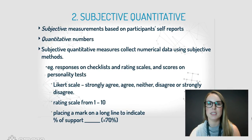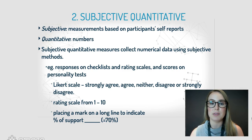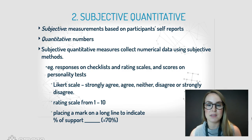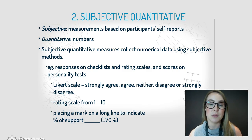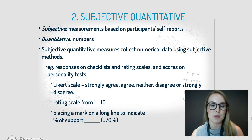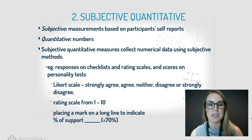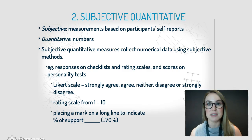The second method is subjective quantitative methods. These are based on people's self-reports and they're numerical — subjective quantitative measures collect numerical data using subjective methods. Examples include responses on checklists and rating scales, and scores on personality tests. We have things like a Likert scale, where you're given a statement and have to rate your agreement from strongly agree to strongly disagree, a rating scale from 1 to 10, or you can place a mark on a line to indicate the percentage of your support or agreement.